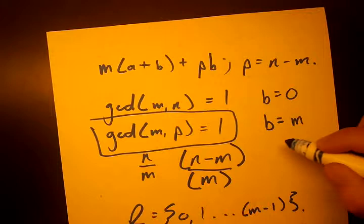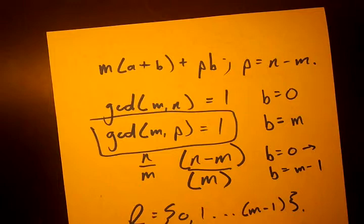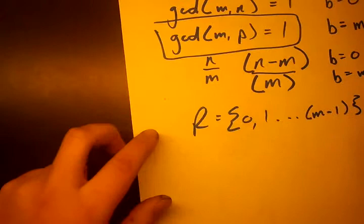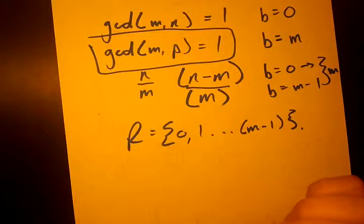So, we've proven that our cycle goes from B equals 0 to B equals M minus 1. That is the full cycle of remainders. And how many remainders are in there? M remainders. And how many remainders are in our remainder set? M remainders. So, we've almost finished this proof completely.